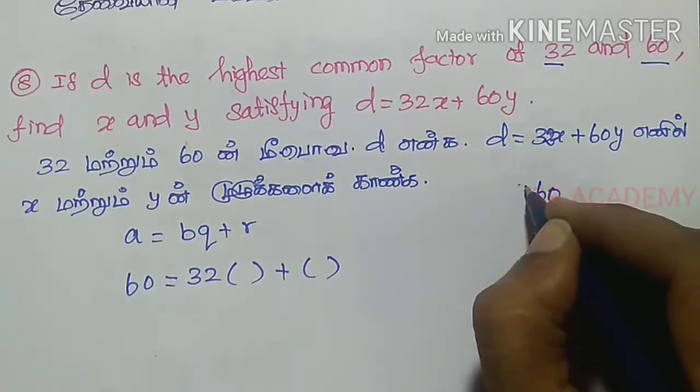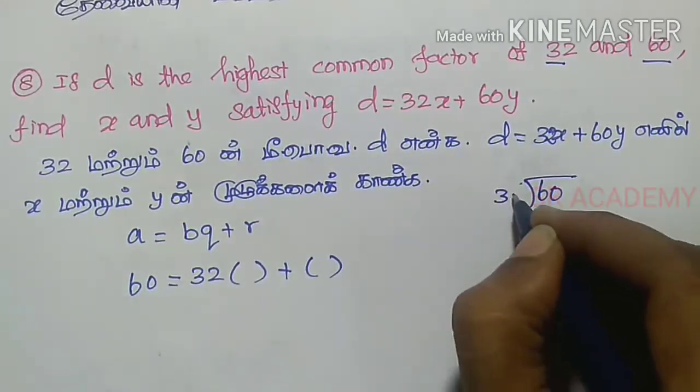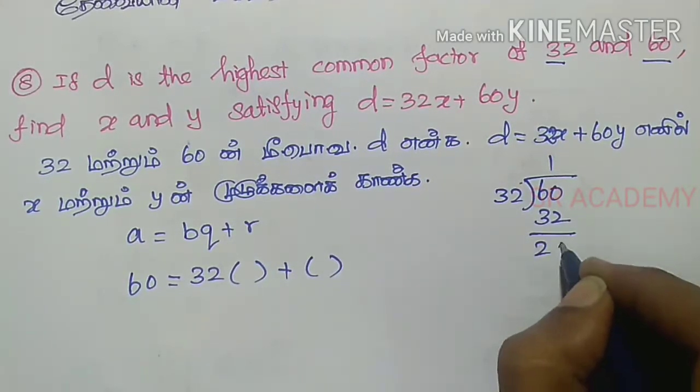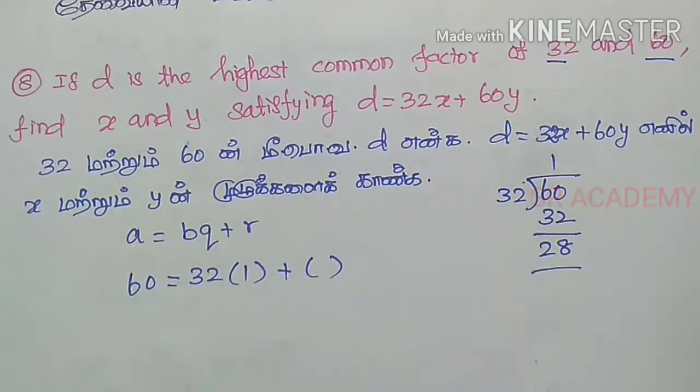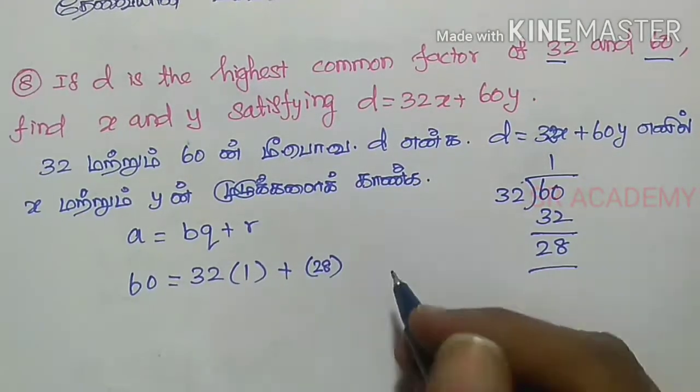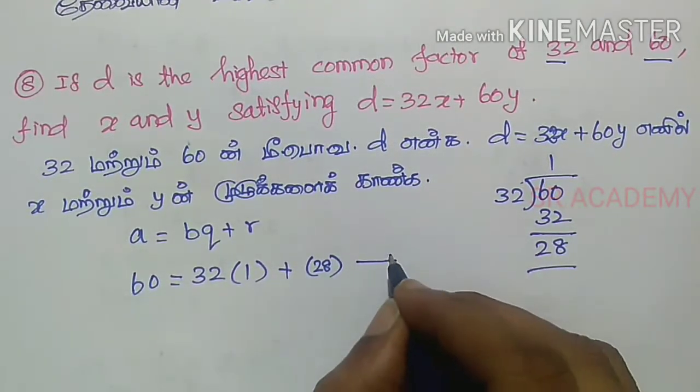60 divided by 32: 1 times 32, the remainder is 28. So Q is 1 and R is 28. This is equation number 1.